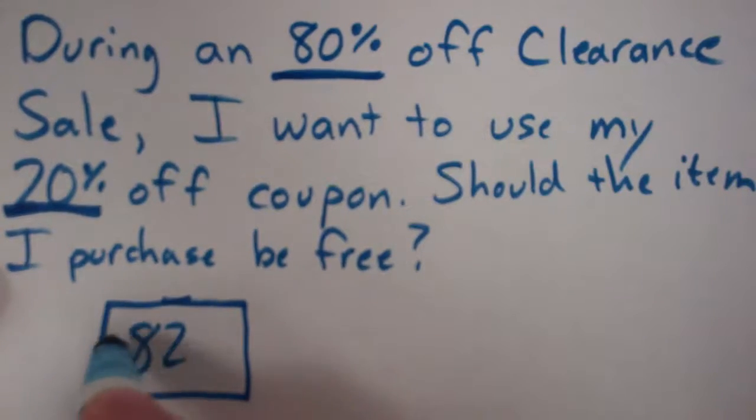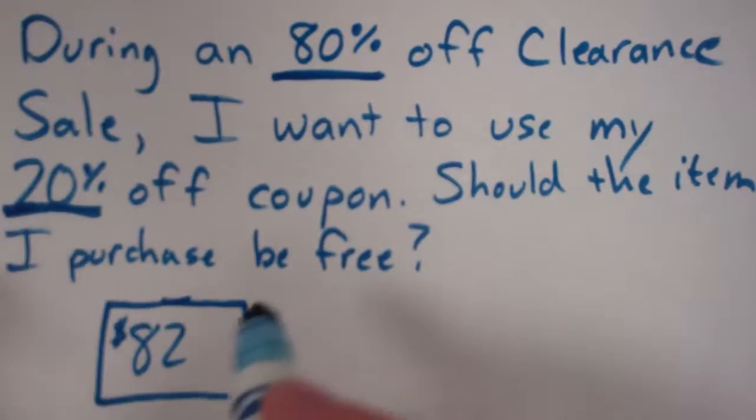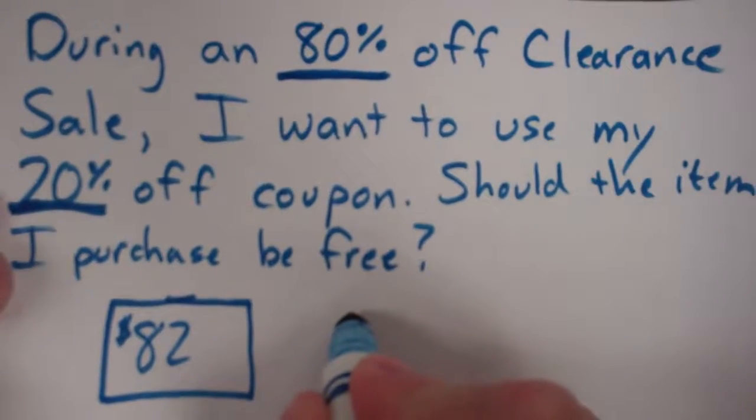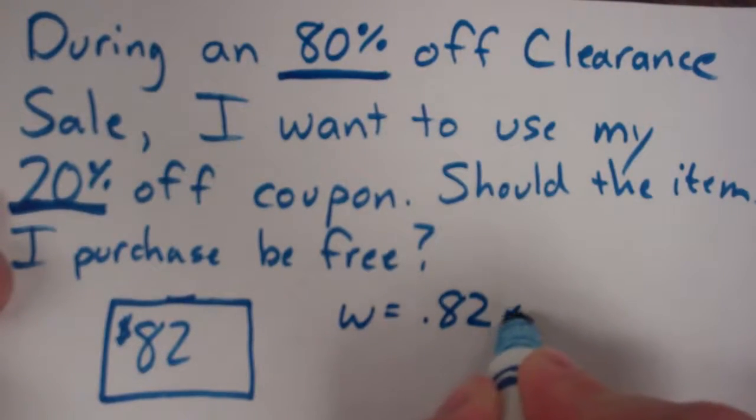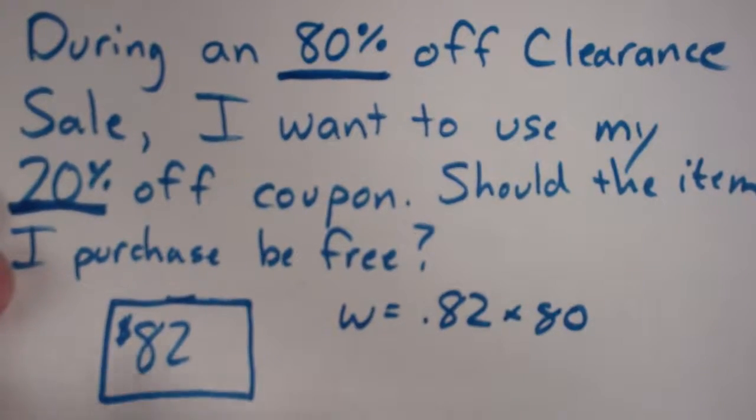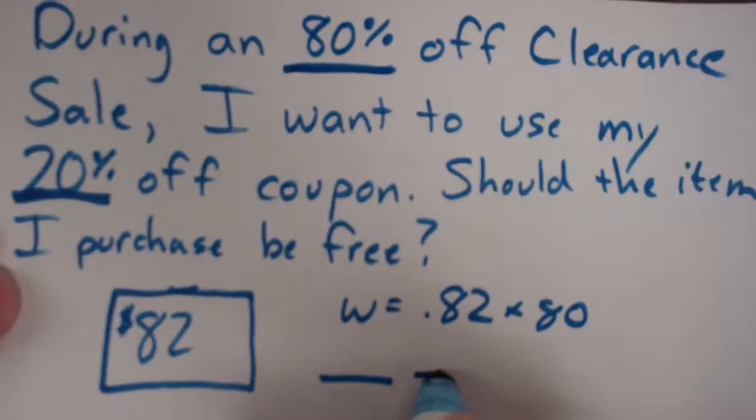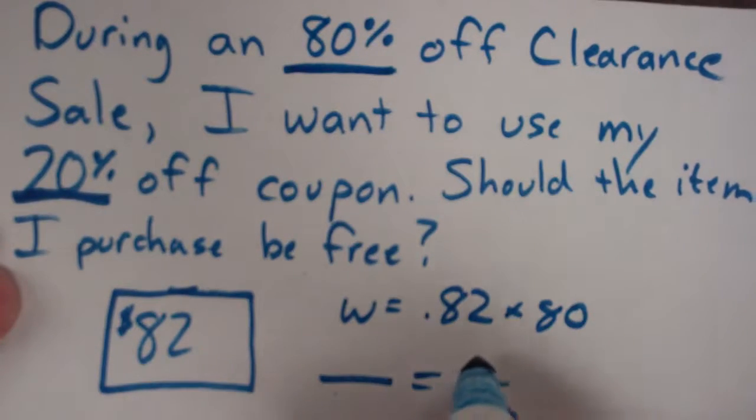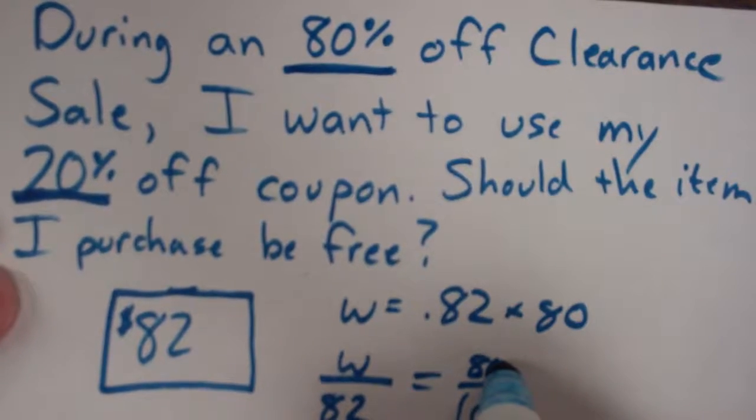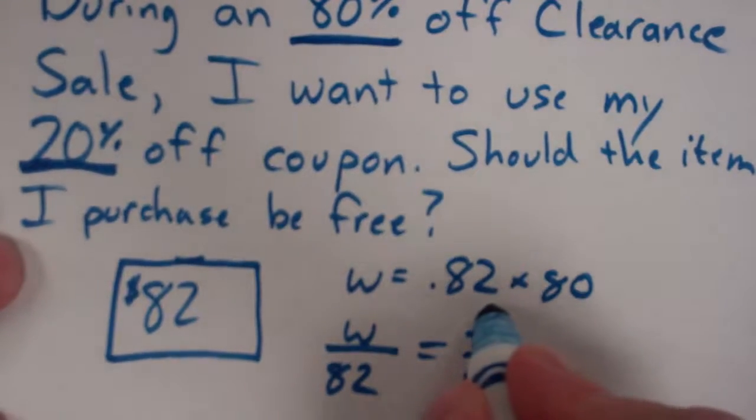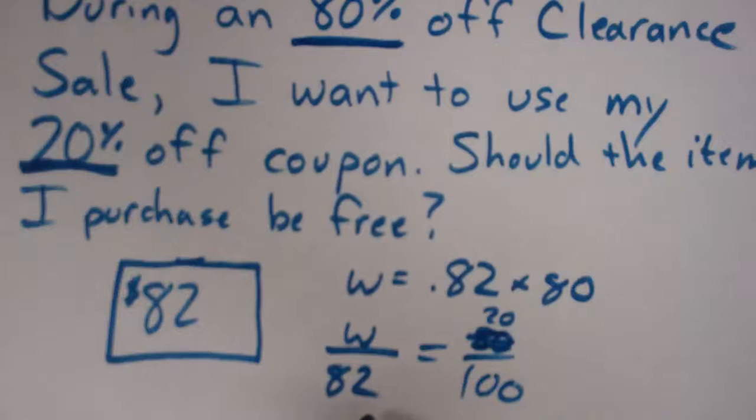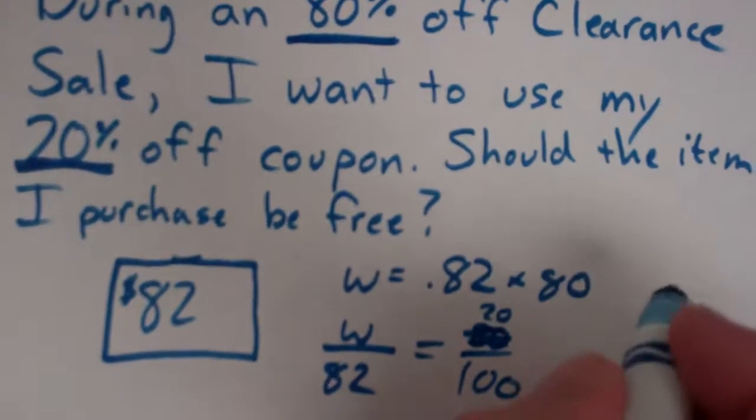But if you look at the way that it actually should happen, let's say you have an $82 purchase and you want to take off 80%. We've talked about several different ways of doing that. You can find 80% of 82. Of course that's your savings. If you take off 80%, you're going to be left with 20%. Now my label would be this is what I have to pay. I have to pay 20% of 82 dollars. So let me solve that real quickly.